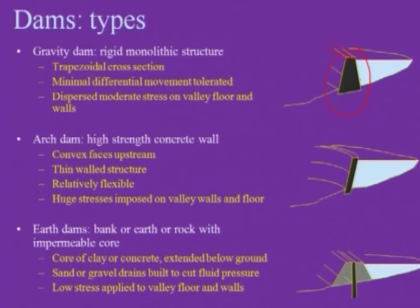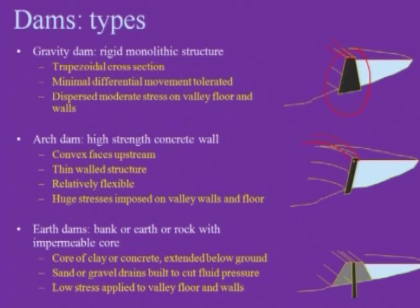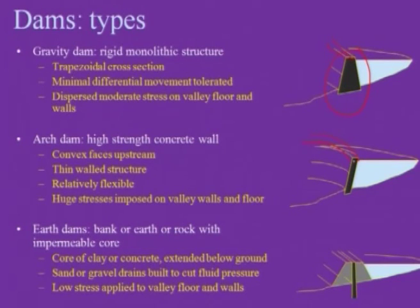An arch dam is made of high-strength concrete with a convex face upstream. It is a very thin wall structure and relatively flexible. It imposes huge stresses on the valley wall and floor due to its curved form transmitting water pressure laterally into the canyon walls.